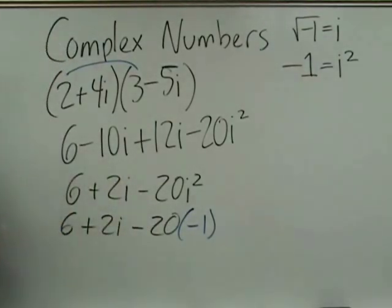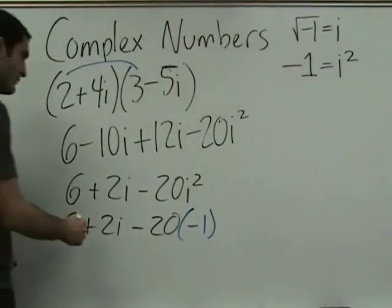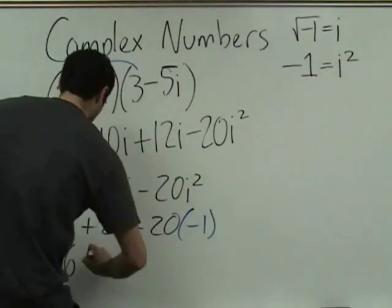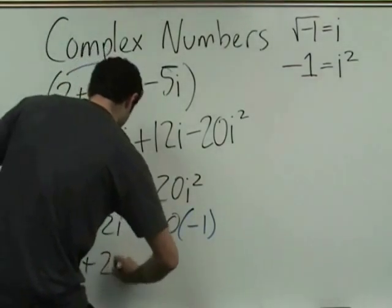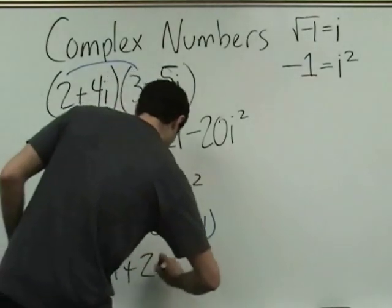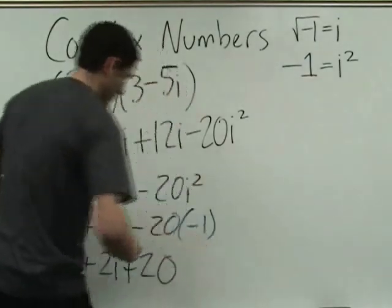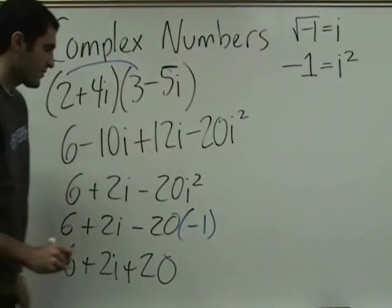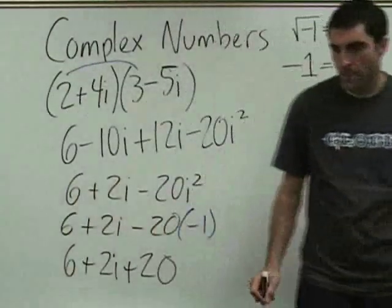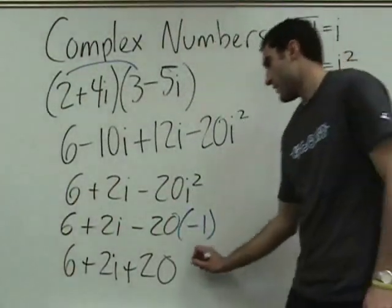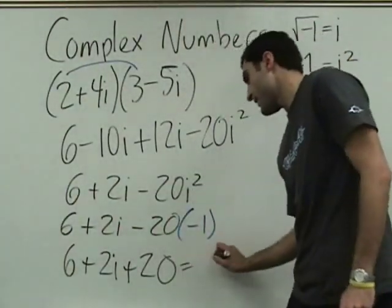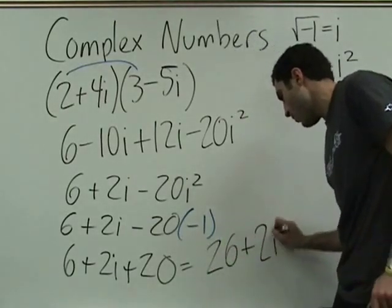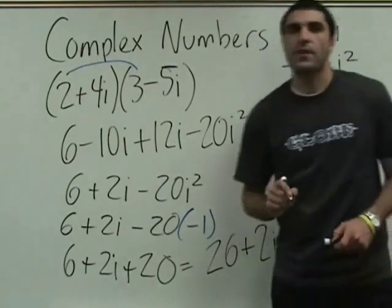Here it is — this is going to be plus 20. 6 plus 2i plus 20 — so then it's 26 plus 2i. 6 and 20 combine. So it's 2i plus 26, or 26 plus 2i. Either one's fine.